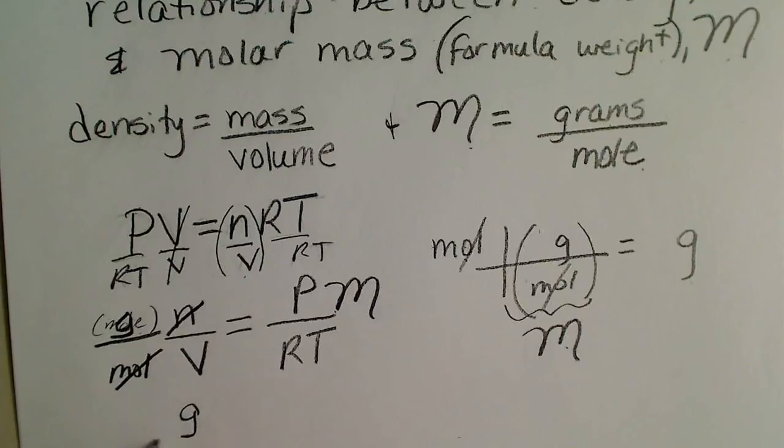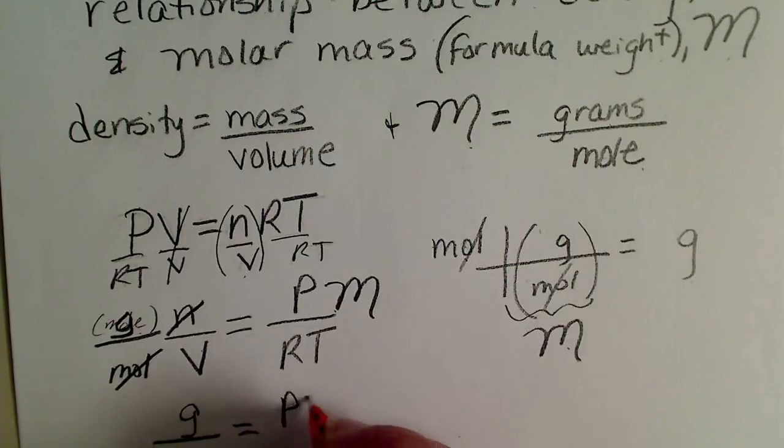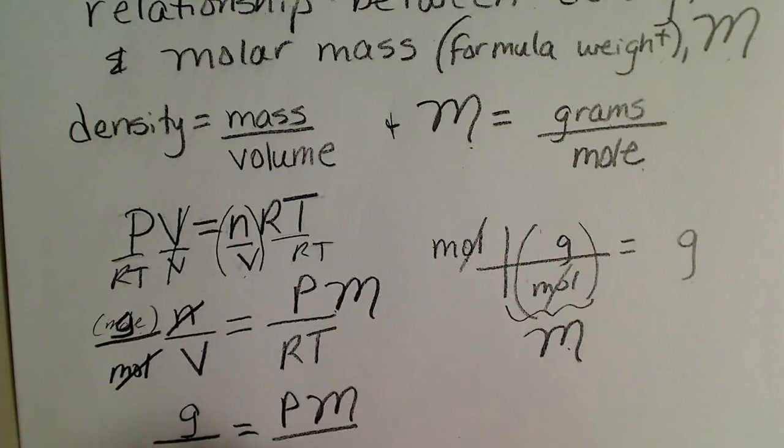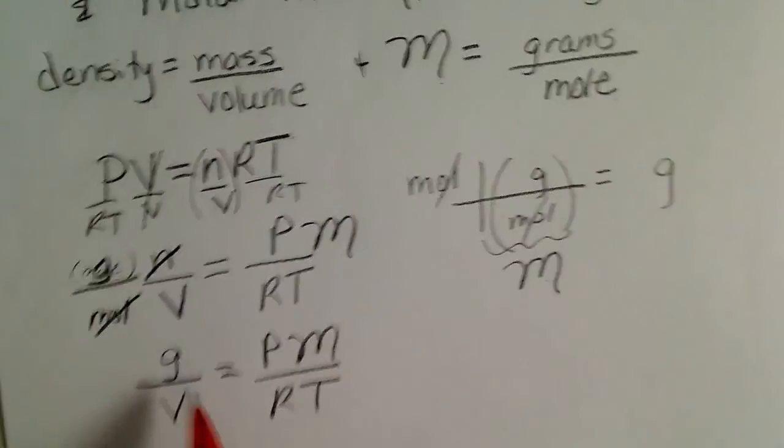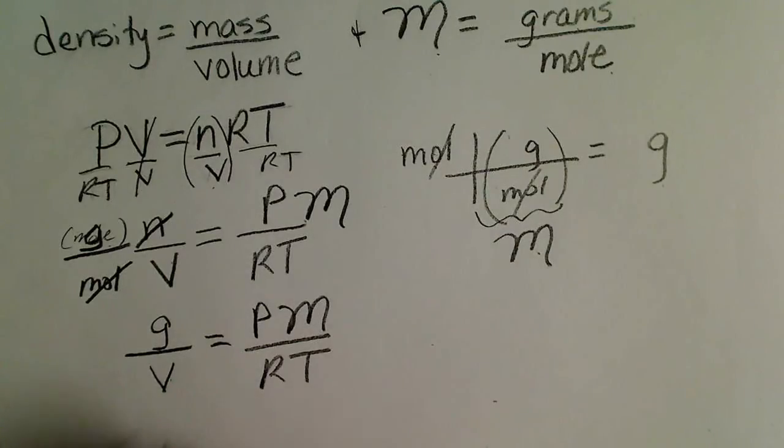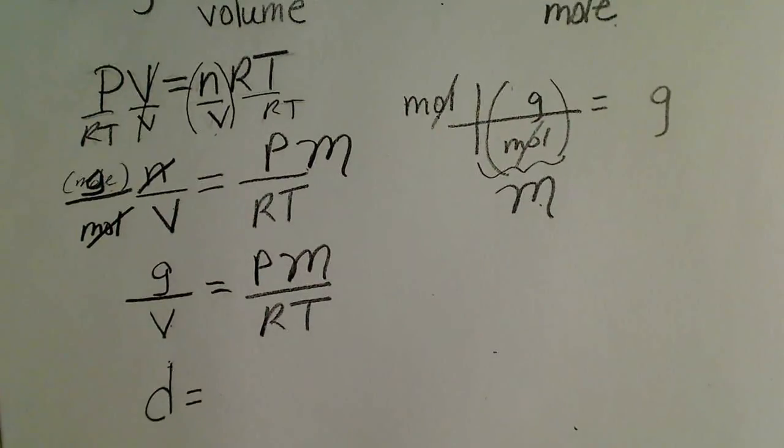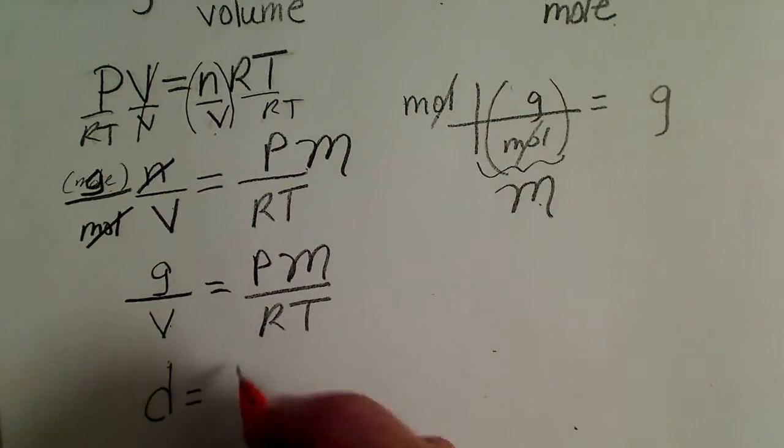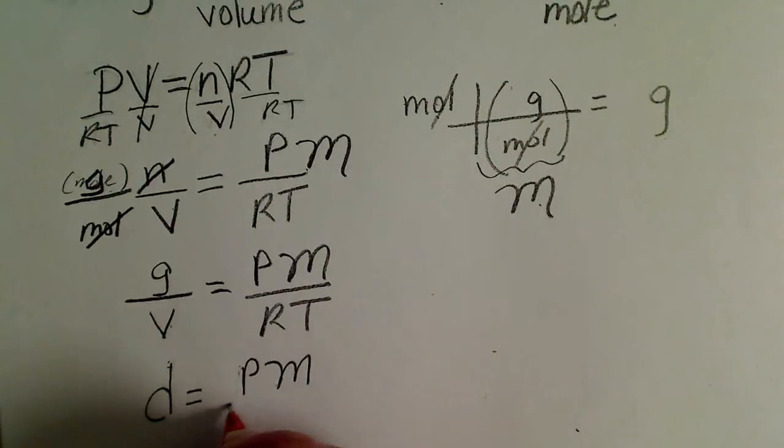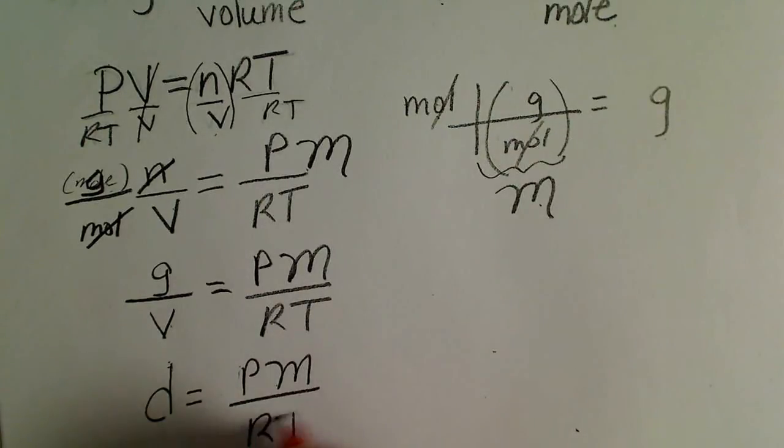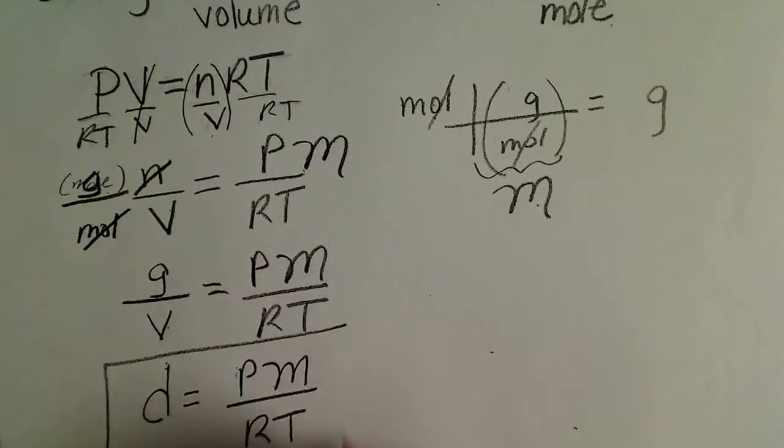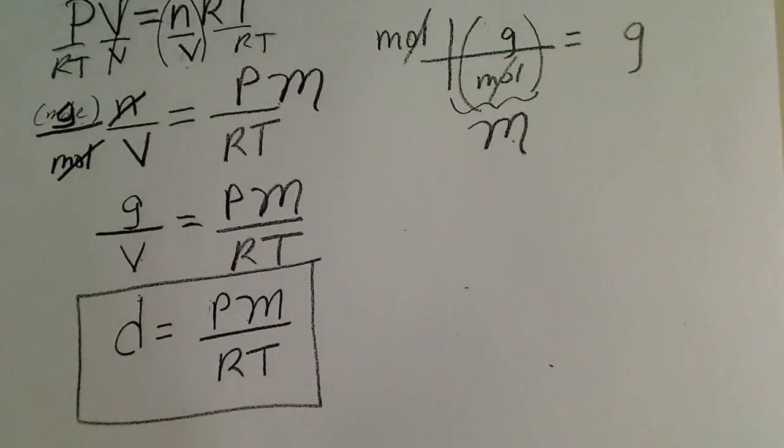So the mass in grams divided by the volume in liters is equal to pressure times molar mass divided by RT. And then grams per volume is what density is. So there is a relationship between density and the molar mass of a gas. And so that is the equation there.